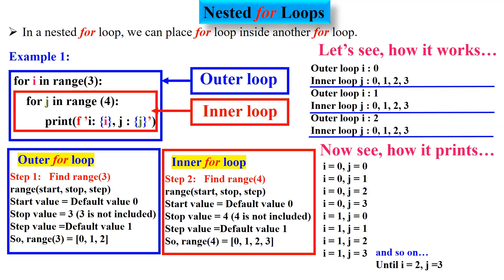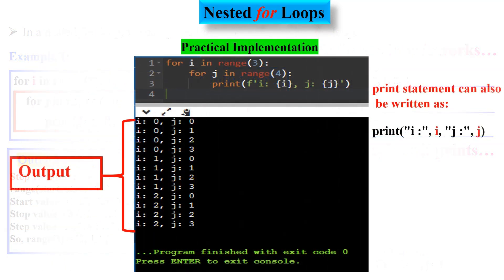The print function is called within the nested loops, displaying a formatted string that contains the current values of i and j. The f before the string indicates an f-string, which allows you to embed expressions inside curly braces to be evaluated and formatted within the string. You can look at the output displayed on the right side and also check how the print statement can be written.